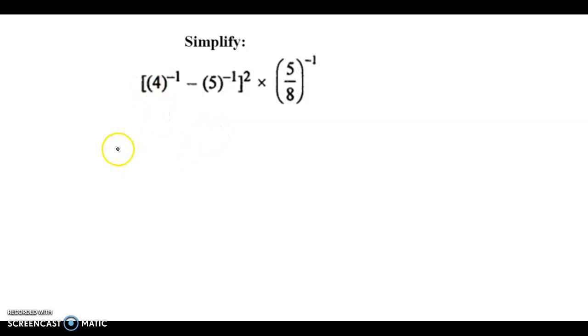So here we have been given the expression as 4 raised to minus 1 minus 5 raised to minus 1, the whole square, into 5 by 8 raised to minus 1.